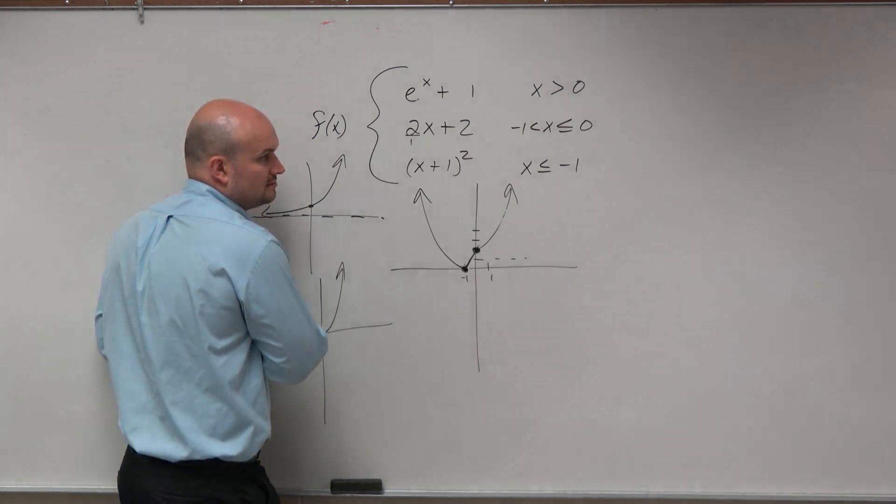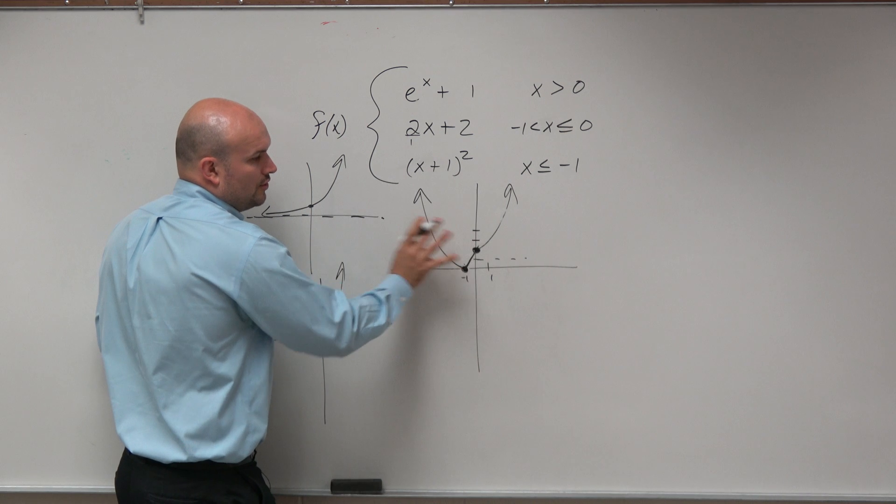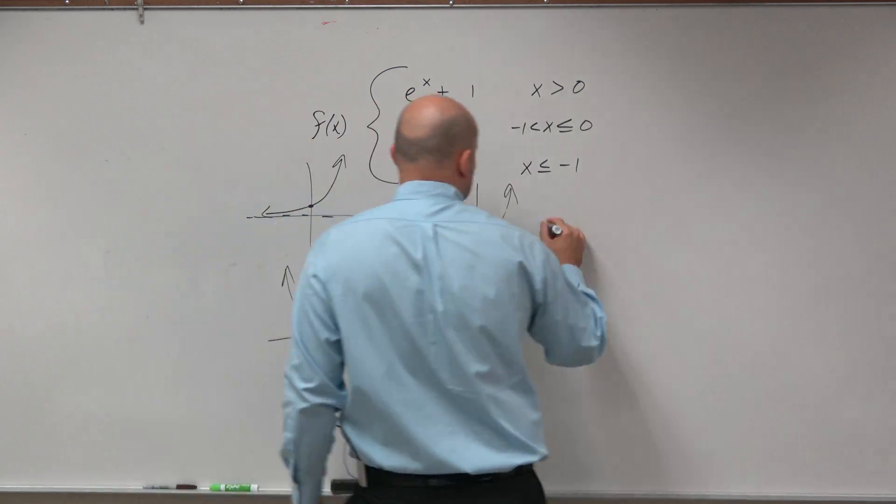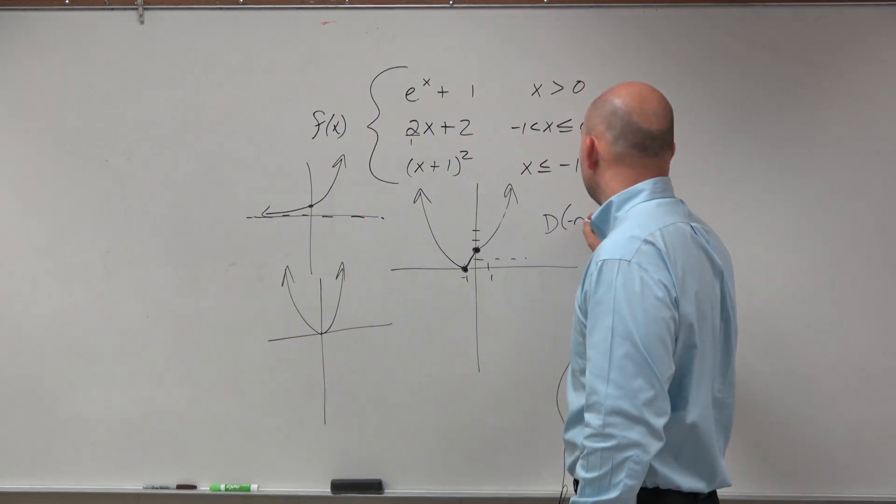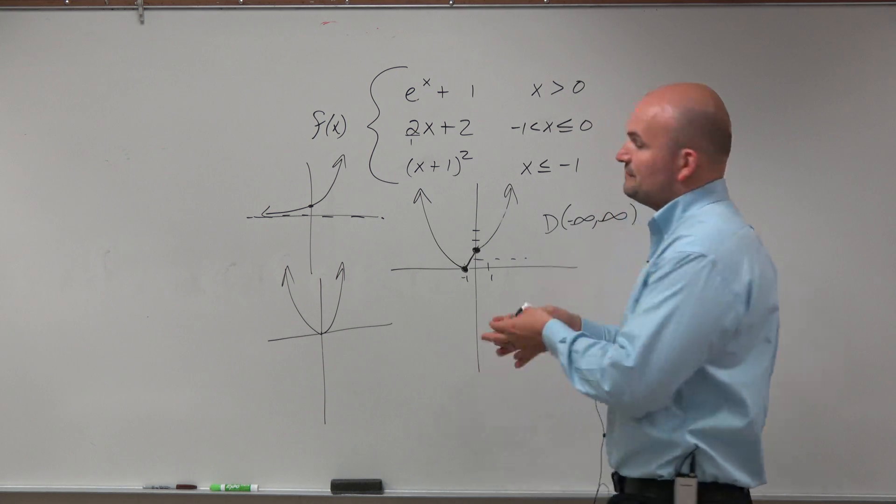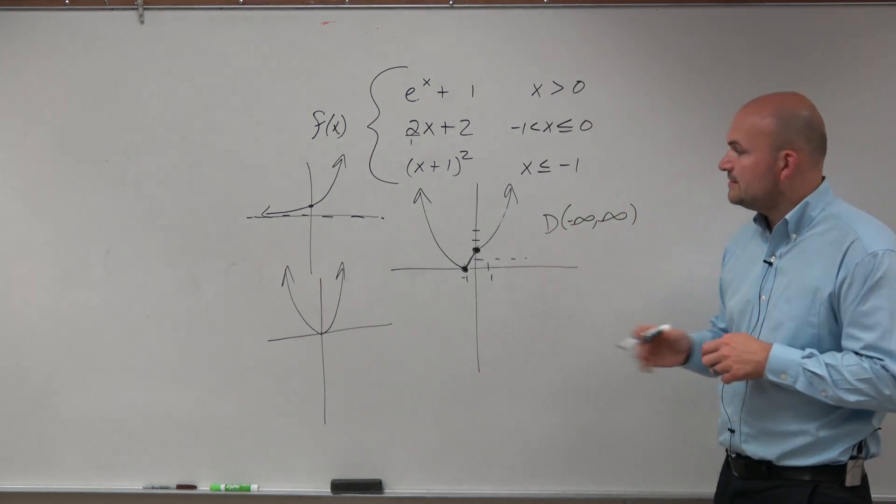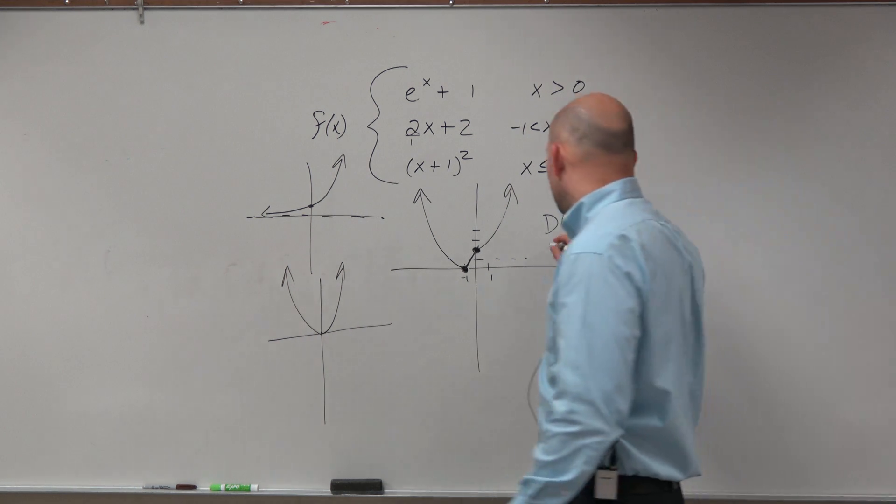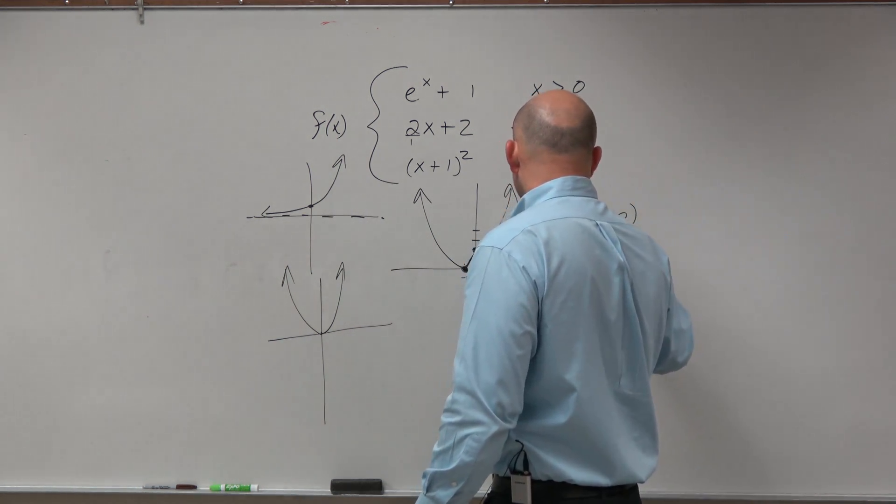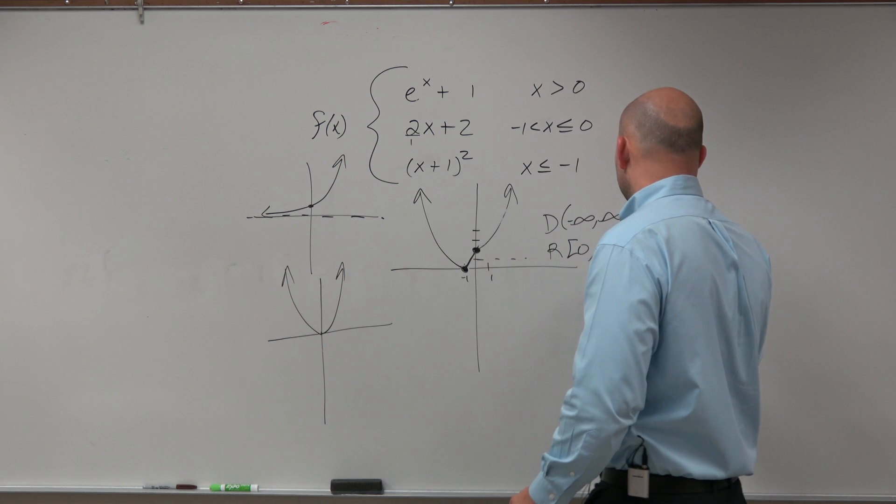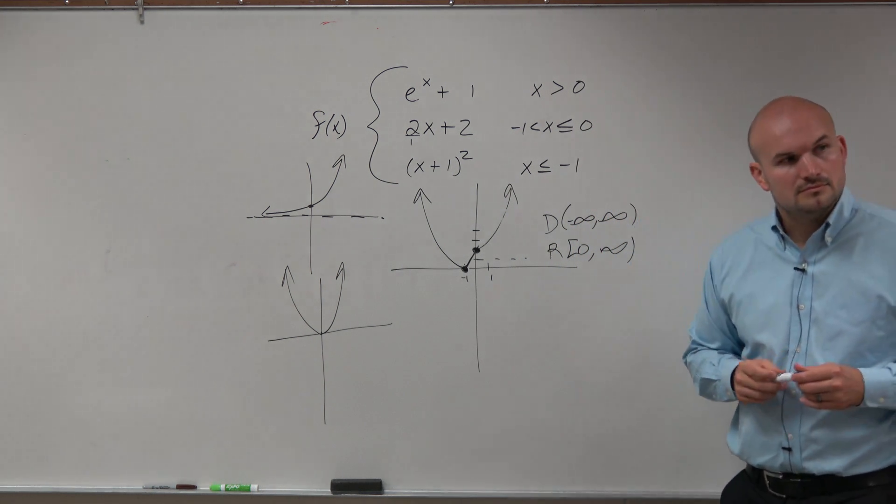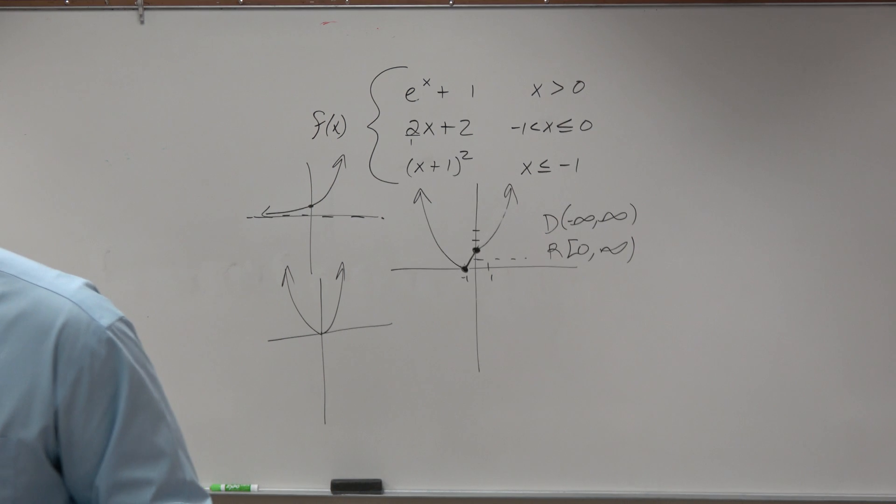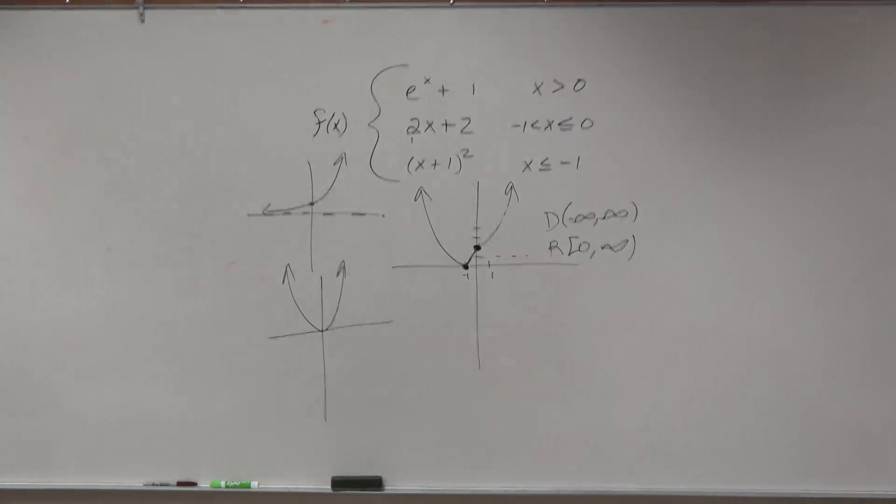Now, this is a continuous function. So if we were going to look at the domain, you guys could say the domain is negative infinity to infinity, because this graph is going to keep on expanding. And then you guys could also see that the range is the lowest the graph is going is going to be at 0, which is included, and it's going to go as high as infinity. Cool. Just a little FYI.